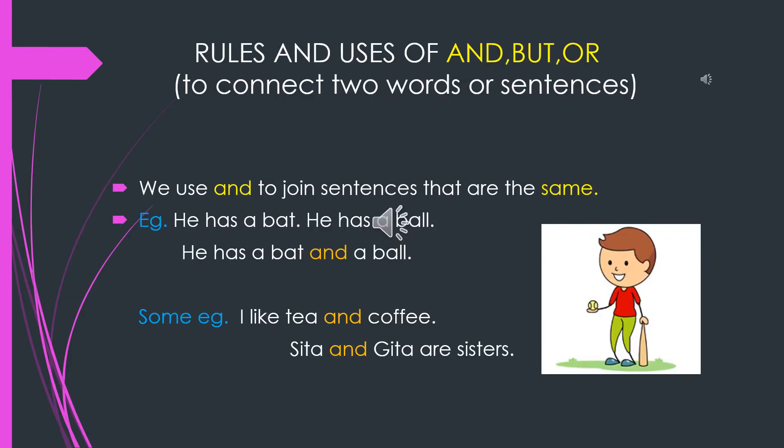To connect two words or sentences we make use of the words and, but, or. We have some rules to use these words. We use the word 'and' to join sentences that are the same.